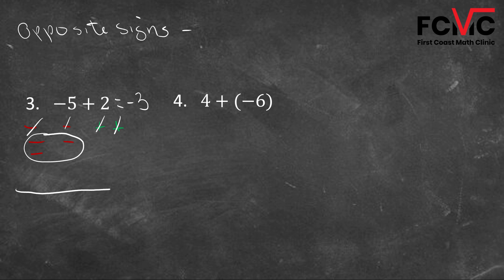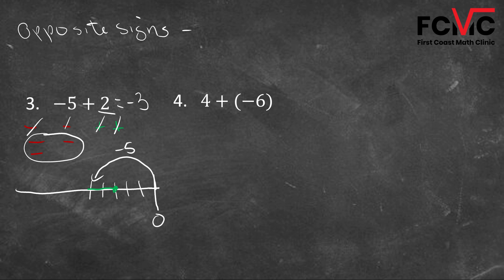If you look at this on a number line: starting at zero, we go five units into the negative — one, two, three, four, five. Then we go back two units in the positive direction — one, two. And where do we end up? Negative three. So how do we go from five and two to get three? We subtract the two values — five minus two — and we take the sign of the number that's further from zero.